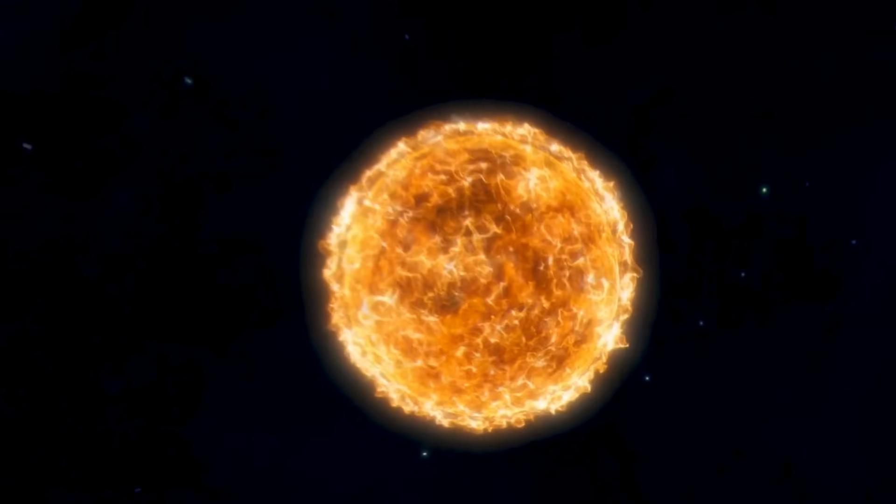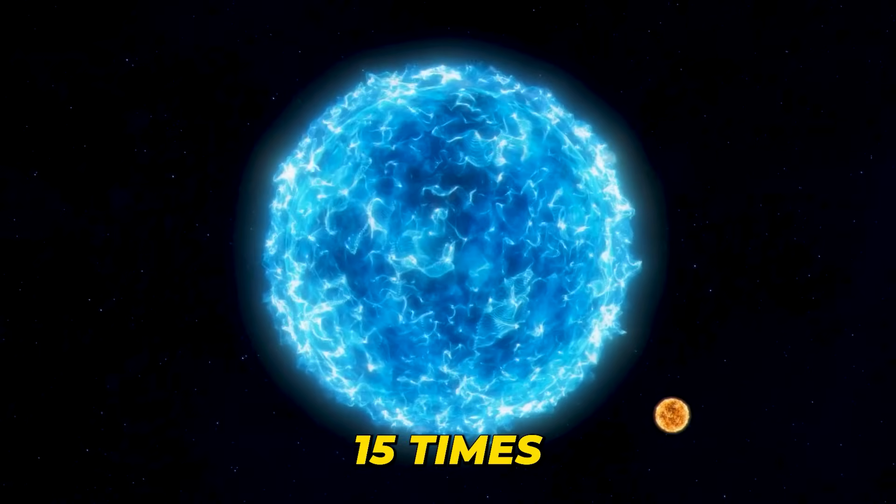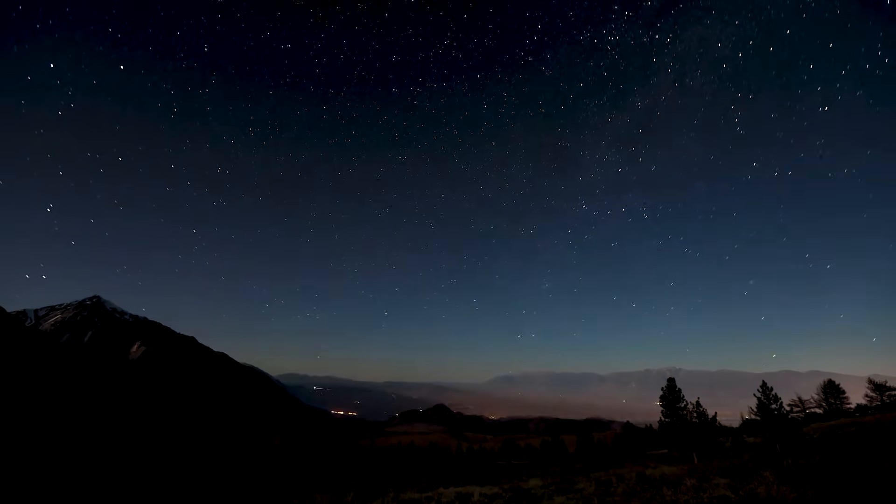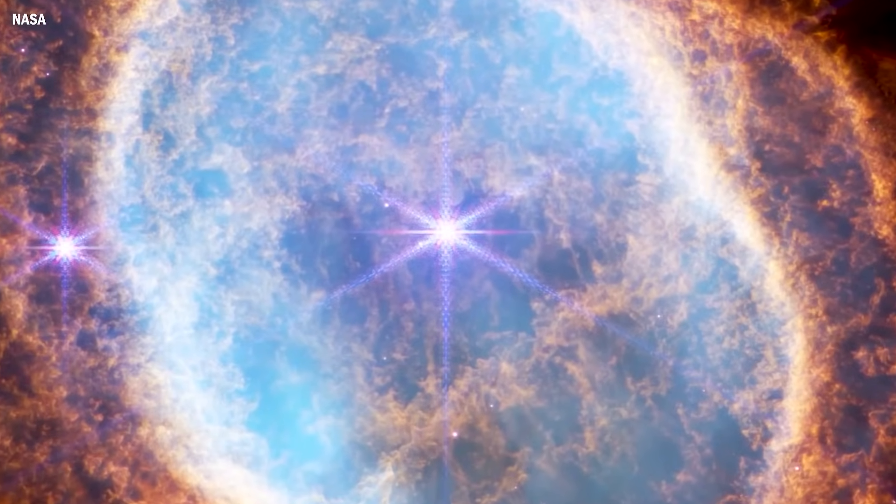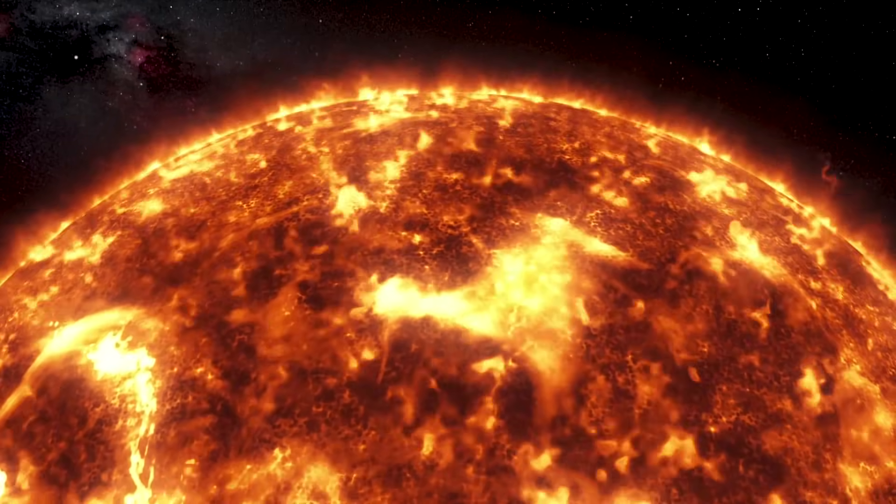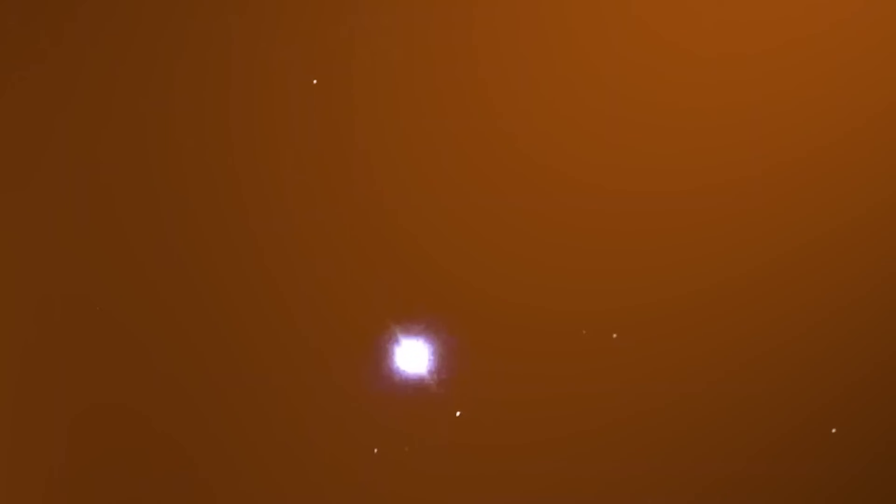Impressively massive, Betelgeuse has an estimated mass of more than 15 times that of our sun. Moreover, this star has been in existence for approximately 8 million years, indicating that it is nearing the end of its life cycle. It has nearly depleted all of its hydrogen at its core and has now commenced the fusion of helium. Betelgeuse is also nearing the end of its life, and in the next 100,000 years, it will explode into a supernova.